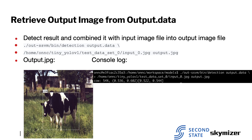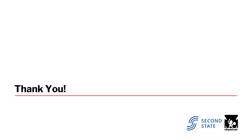To show the output image, we have to use the detection tool to draw the named label and the bounding box. As you can see here, the detection tool will show the inference result, and you can click output.jpg to see the result on the original picture just like the left side. That's all of my tutorial. Thank you for listening.